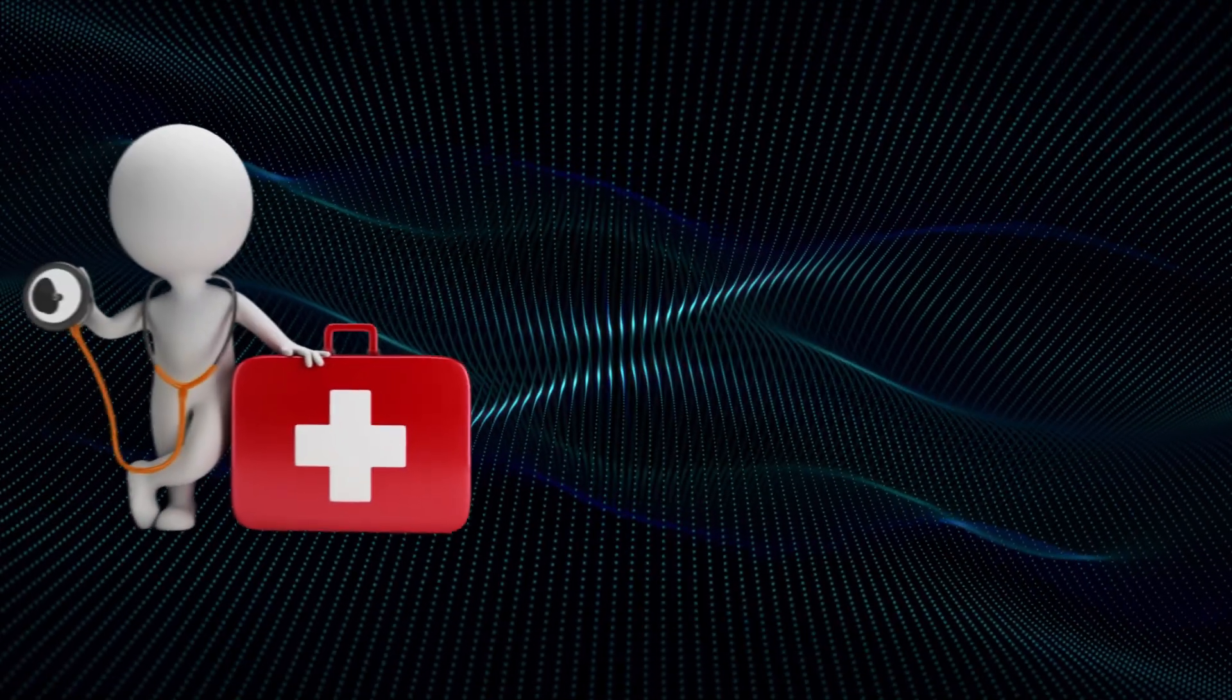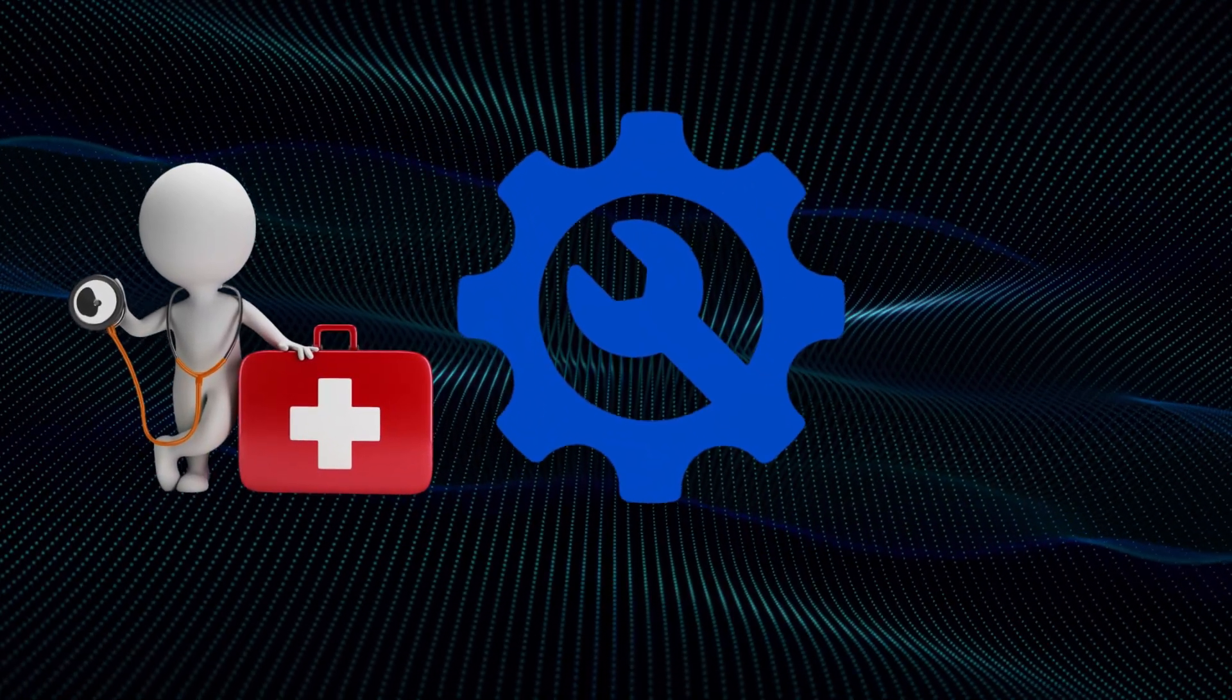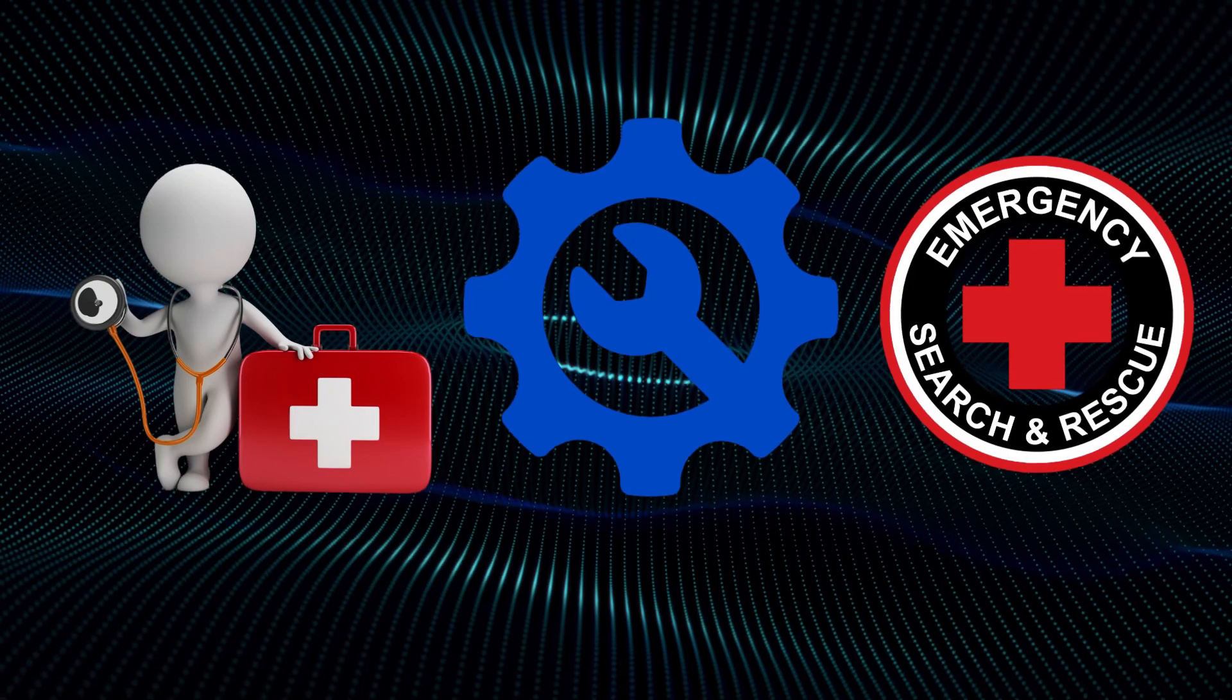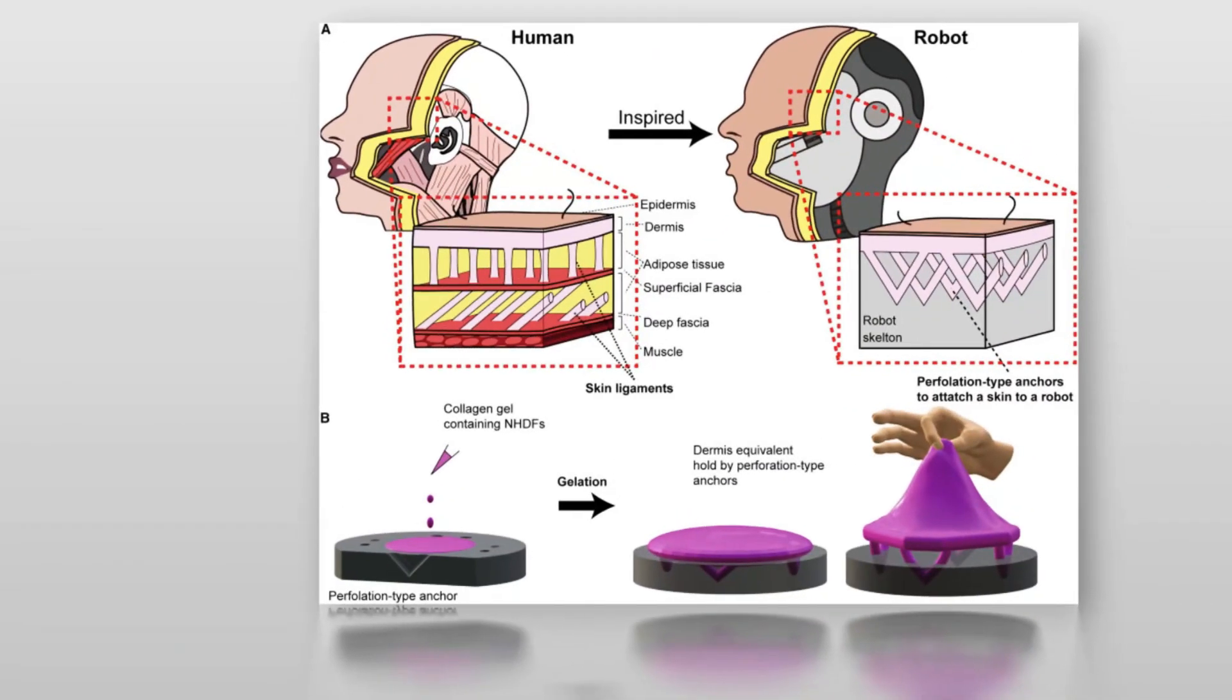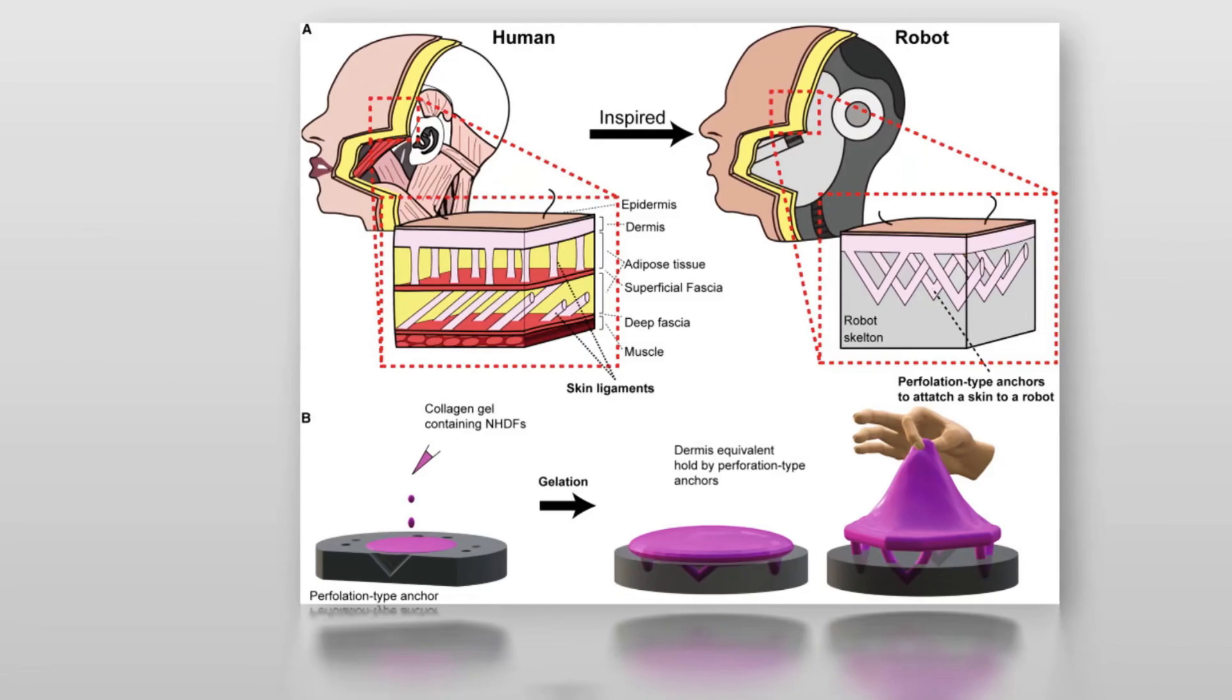This kind of sensory feedback could revolutionize how robots are used in industries like healthcare, manufacturing, and even search and rescue. It could also pave the way for more intuitive and natural human-robot interaction blurring the lines between man and machine.